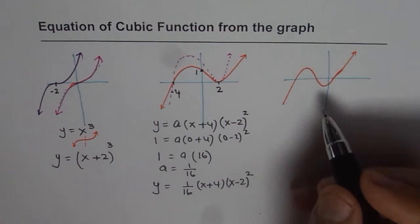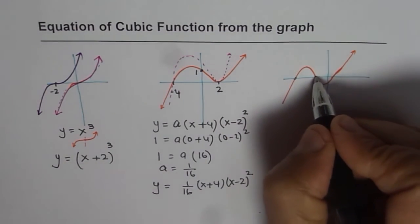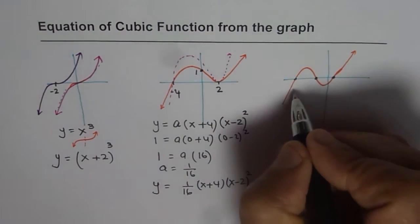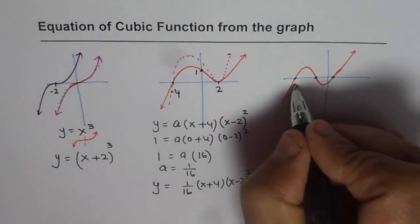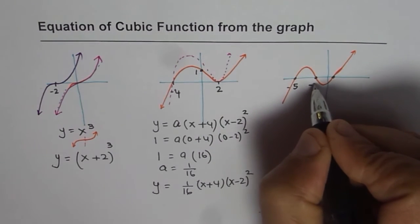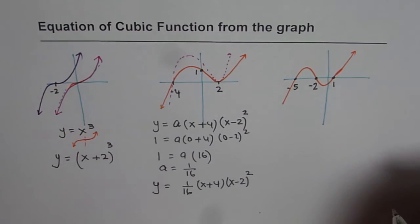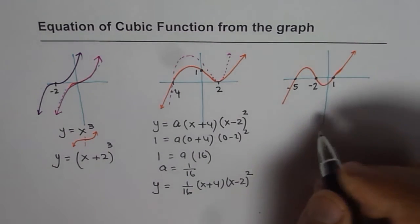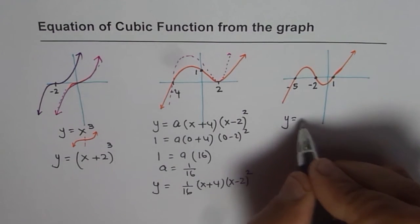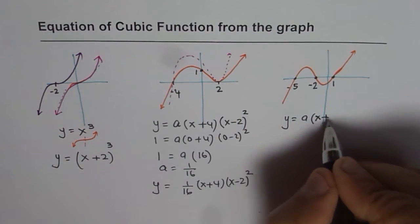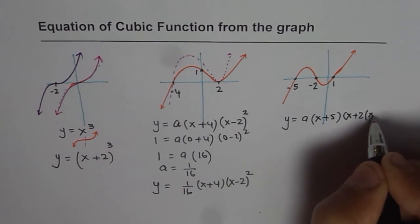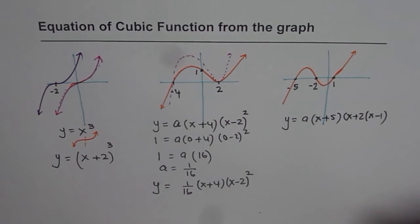Now let us take another cubic function which has not two zeros but three zeros. Let us say these zeros are at minus 5, minus 2 and let us say 1. In that case, what is the equation of this graph? So these are all three linear zeros. We can write this as y equals to a times x plus 5 times x plus 2 times x minus 1. It's taking care of all three zeros.